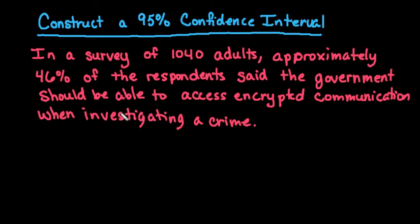So let's look at the situation that we have. In a survey of 1,040 adults, approximately 46% of the respondents said the government should be able to access encrypted communication when investigating a crime.